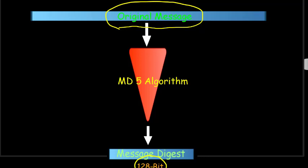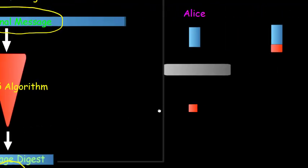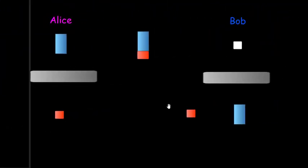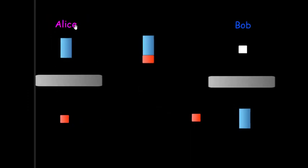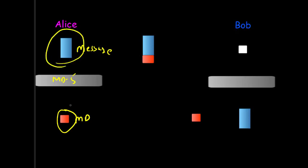Let us see with an example how this message digest works. We have two entities, Alice and Bob. The blue part represents the original message. Alice uses the MD5 algorithm block and generates the message digest — let's call this MD. Next, she appends this message digest with the message after calculating it.